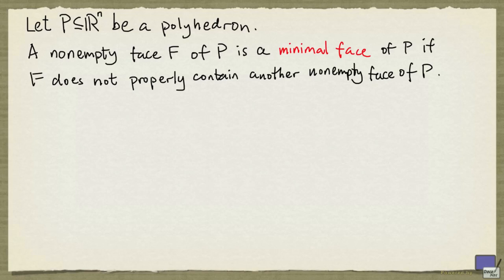Let P be a polyhedron in R^n. A non-empty face F of P is a minimal face of P if F does not properly contain another non-empty face of P.